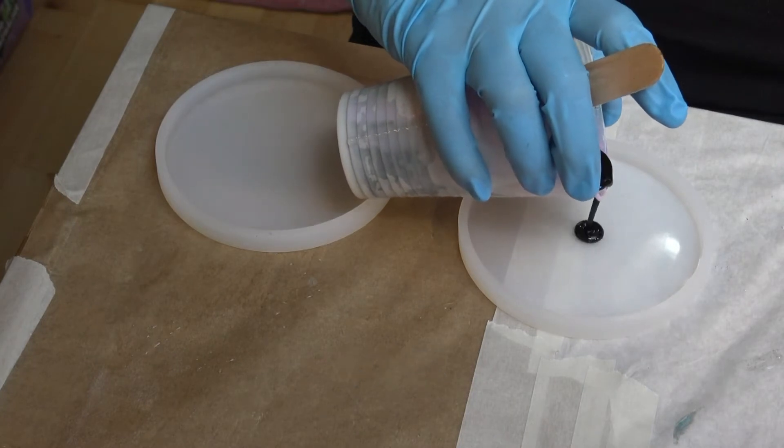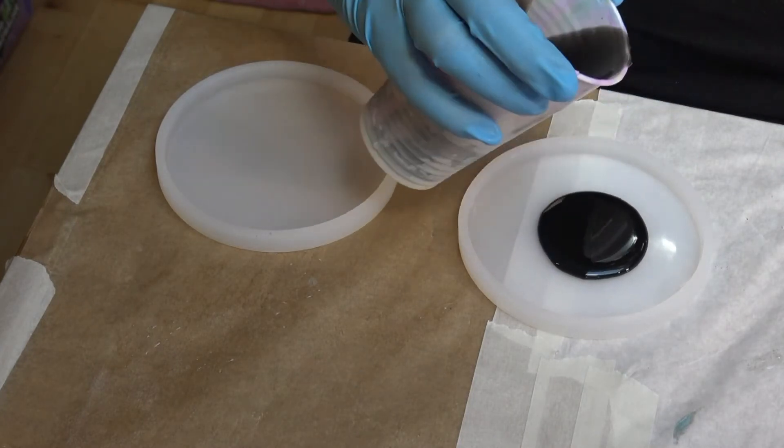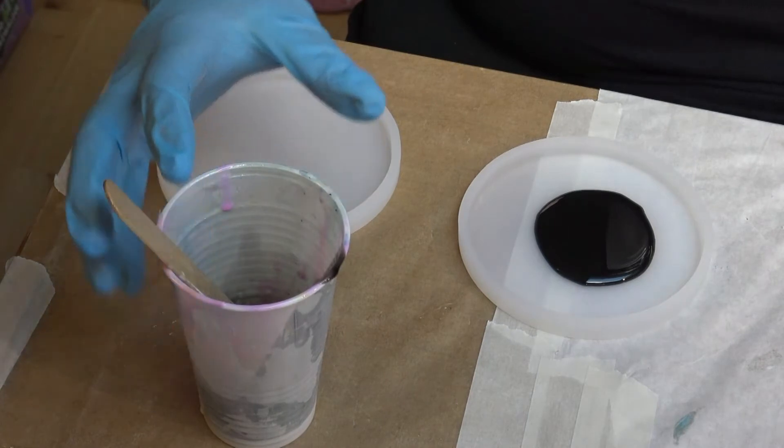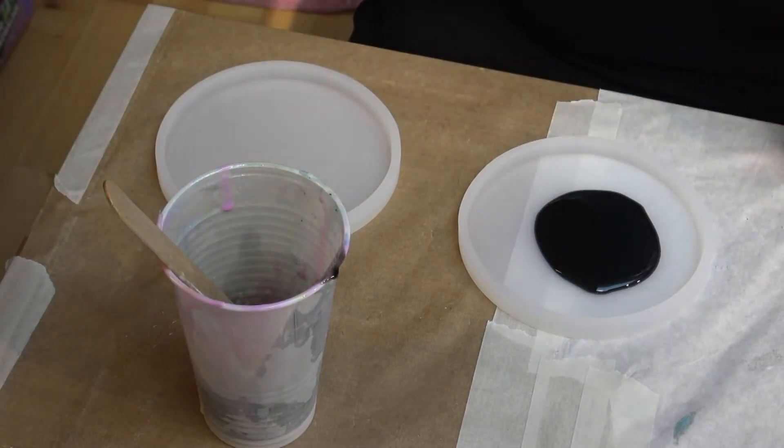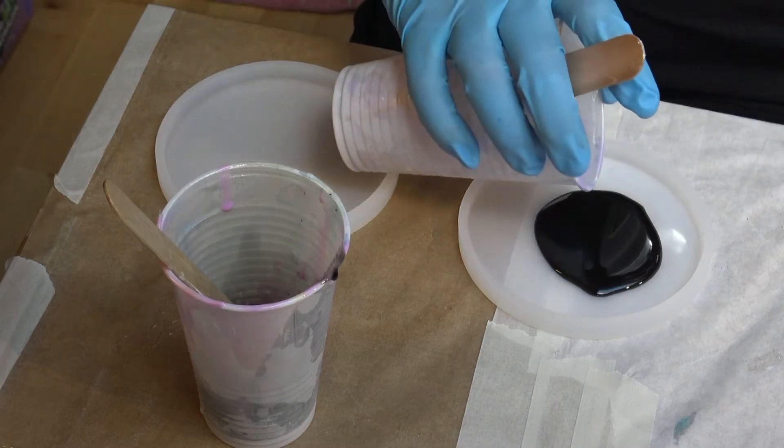So what I'm doing here, I waited till my resin had about 40 degrees Celsius and I poured in the first transparent color, which is the black one here.